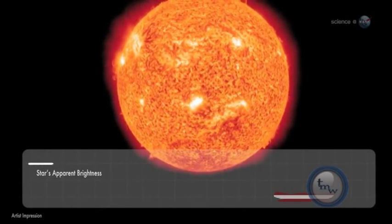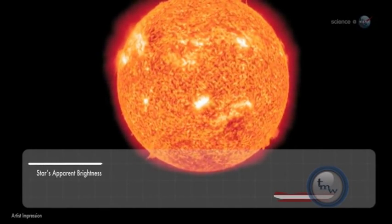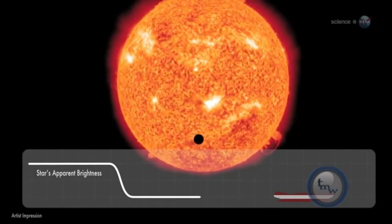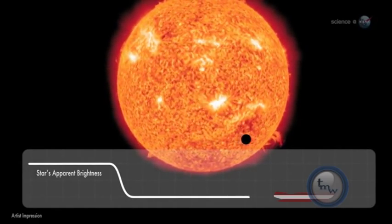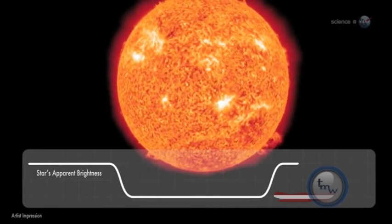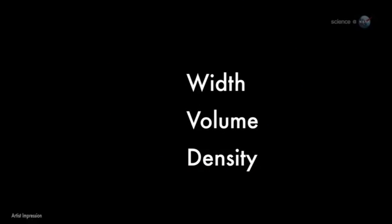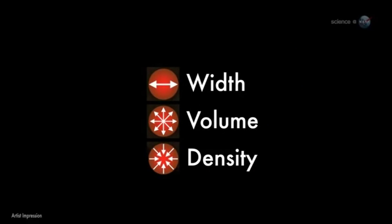Spitzer recently measured the extraordinarily small amount of light 55 Cancri e blocks when it crosses in front of its star. These transits occur every 18 hours, giving researchers repeated opportunities to gather the data they need to estimate the width, volume, and density of the planet.